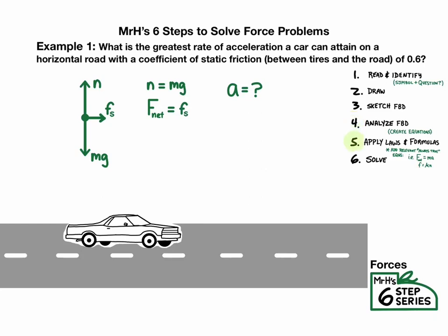Step five is to add relevant equations that are always true. In this case, I've got friction. So we should add our friction equation, F equals mu n. That's going to be relevant. And I also have a net force equation. So we should add the equation for Newton's second law, F net equals ma. And now I have a list of four equations to help me solve for our question for acceleration.